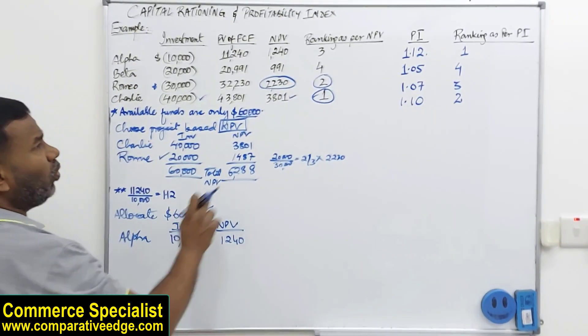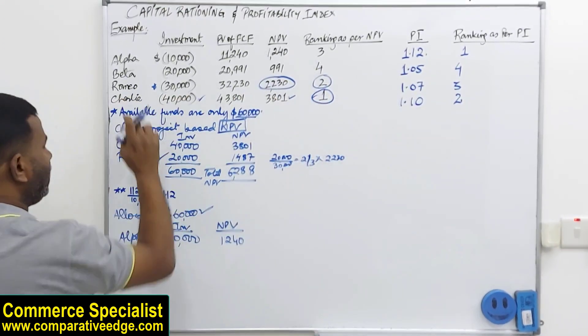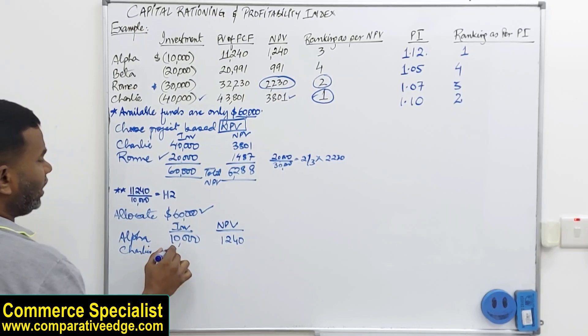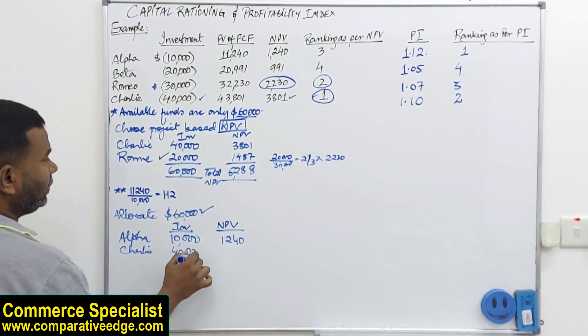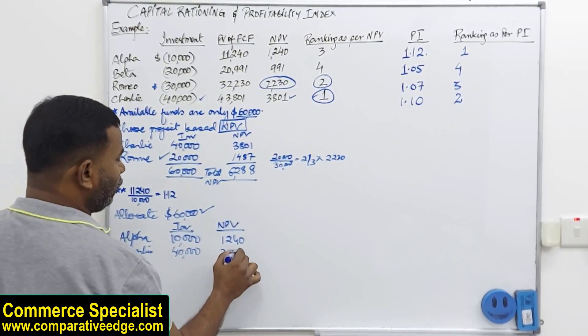So Alpha requires an investment of 10,000 and it will give me an NPV of 1,240. I have 60,000. 10,000 is already invested. What is my second best option? Second as per profitability index is Charlie. So then I will go for Charlie. I still have money. Charlie requires 40,000 and I will get an NPV of 3,801.